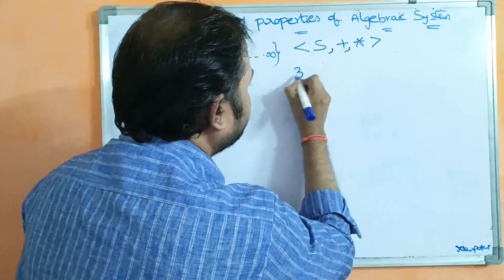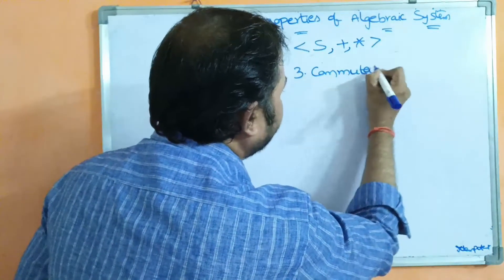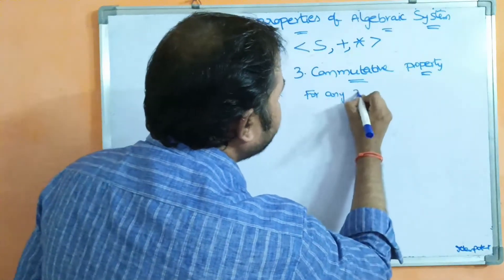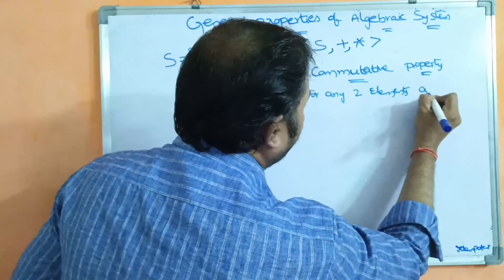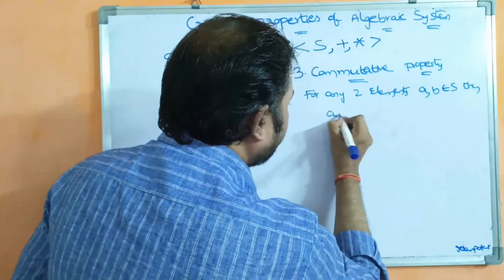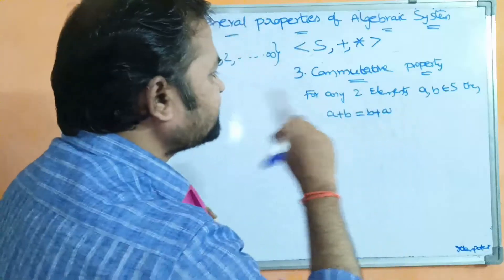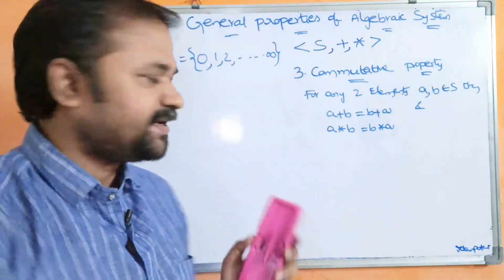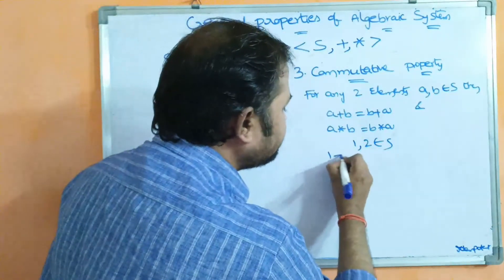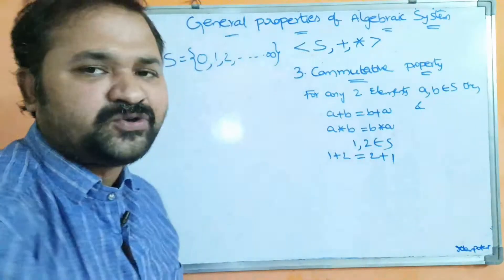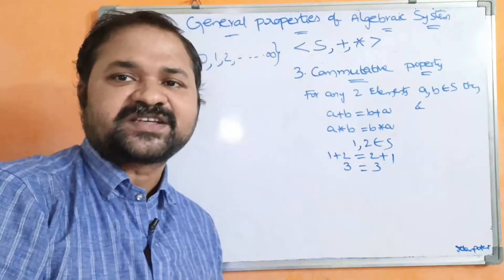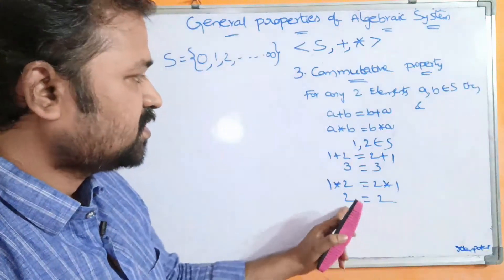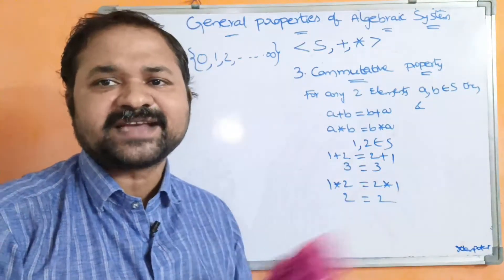The third property is commutative property. Commutative property means we take any two elements from the set. For any two elements a, b belonging to S, if a plus b equals b plus a, and a star b equals b star a, it satisfies commutative property. Example: 1+2=2+1 gives 3=3, and 1 into 2 = 2 into 1 gives 2=2. So it satisfies commutative property.